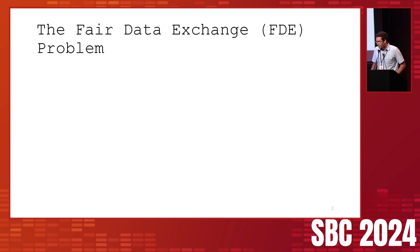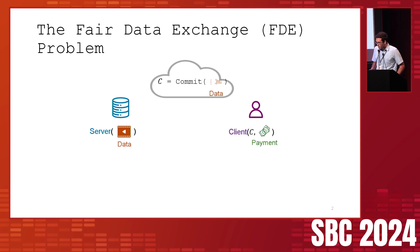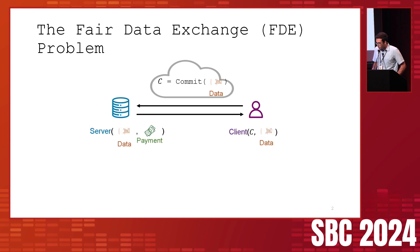I'd like to start by explaining the fair data exchange problem. This problem involves two parties: a server that holds some data, with a succinct commitment to this data publicly accessible in the cloud, and a client that holds some payment and would like to retrieve the data by paying for it. Our goal is to design a protocol where the server obtains the payment and the client obtains the data.